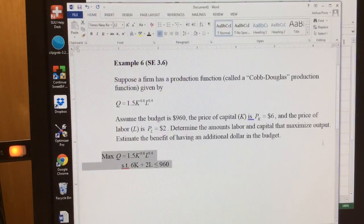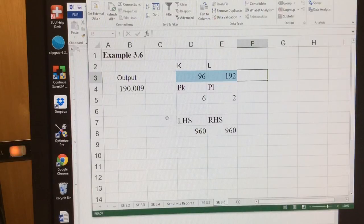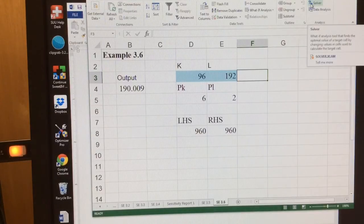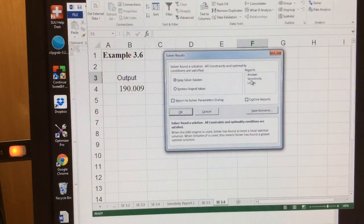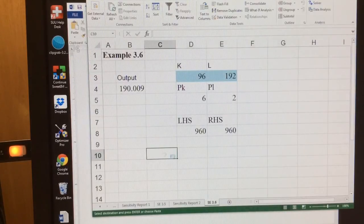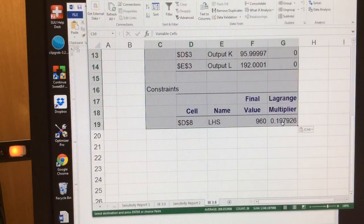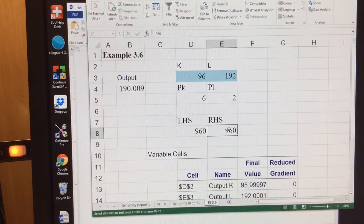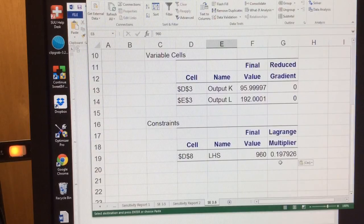But now the next part of the question asks estimate the benefit of having an additional dollar in the budget. So how much does our output increase by having our right-hand constraint increase by one unit? Well, that's exactly what our Lagrange multiplier tells us. So I'm going to solve this again, run a sensitivity report, and it's 0.198 or 0.20. So for every dollar increase in my budget, I'll increase output by 0.2.